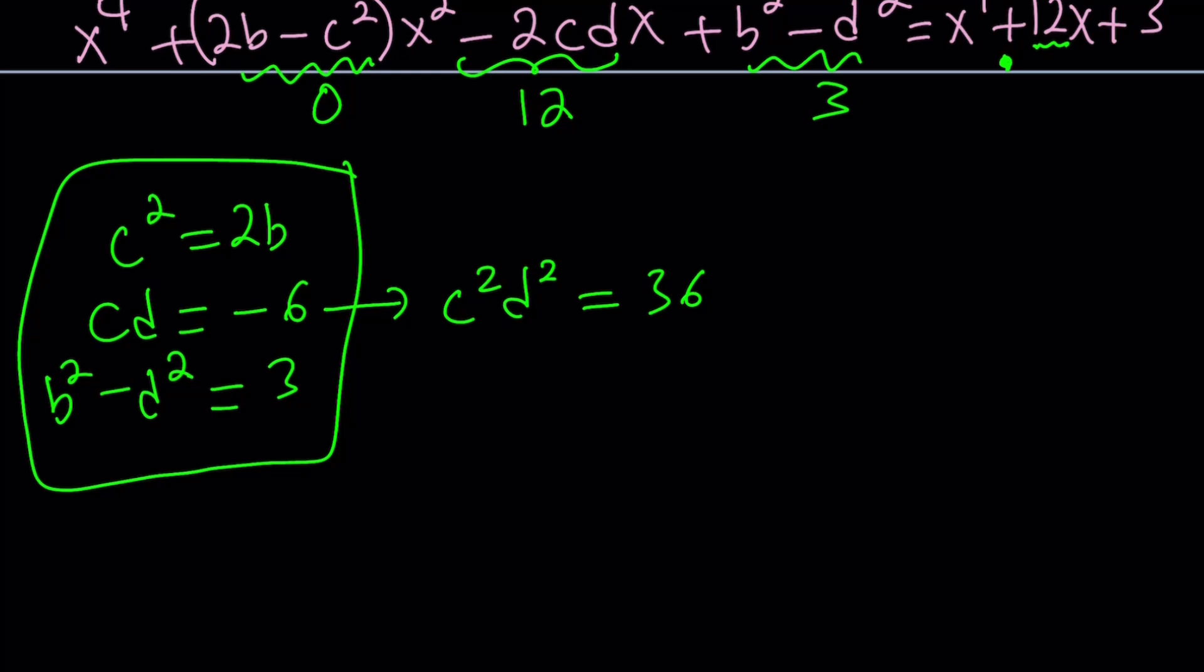And from the first equation I can actually go ahead and replace c squared with 2b. So that gives us 2b d squared equals 36. If you divide by 2 you get b d squared equals 18. Awesome.